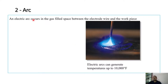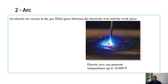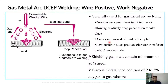The electric arc occurs in a gas-filled space between the electrode wire and the workpiece, and can generate temperatures up to 10,000°F. The electrode is melted and deposited into the joint at the arc location. The amount of temperature generated can be varied based on whether DCEP or DCEN welding is used.